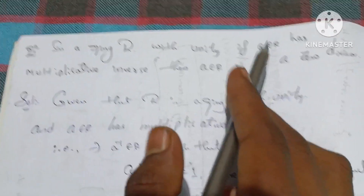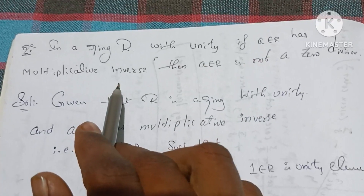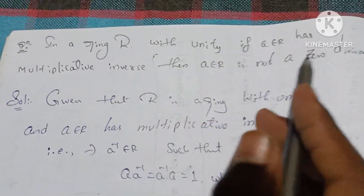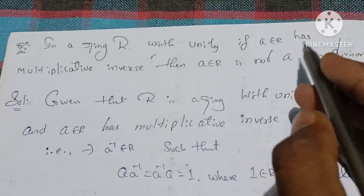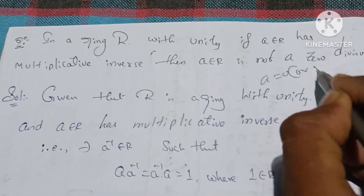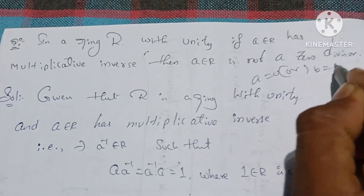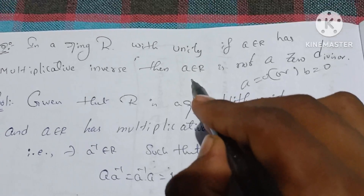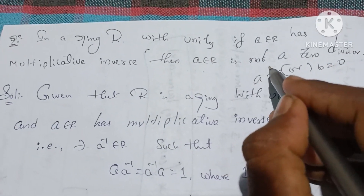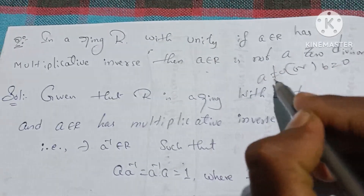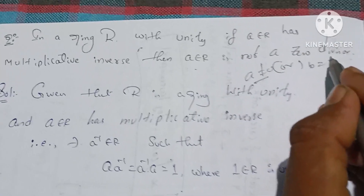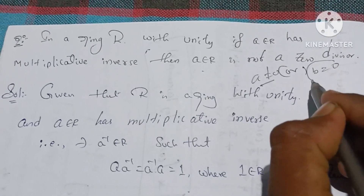If a is an element with a multiplicative inverse, and if a is not a zero divisor — meaning if a·b is equal to 0, then b is equal to 0 — then a is not a zero divisor.